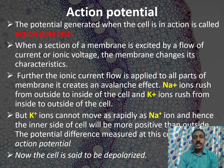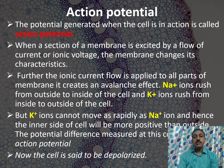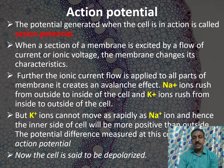Next, we shall see about action potential. The potential generated when the cell is in action is called action potential. When the membrane is excited by a flow of current or ionic voltage — that is, when the muscle or the tissue is in action — the membrane will be excited and changes its characteristics. During this time, the ionic current flows through the membrane and it creates an avalanche effect in the cell membrane.